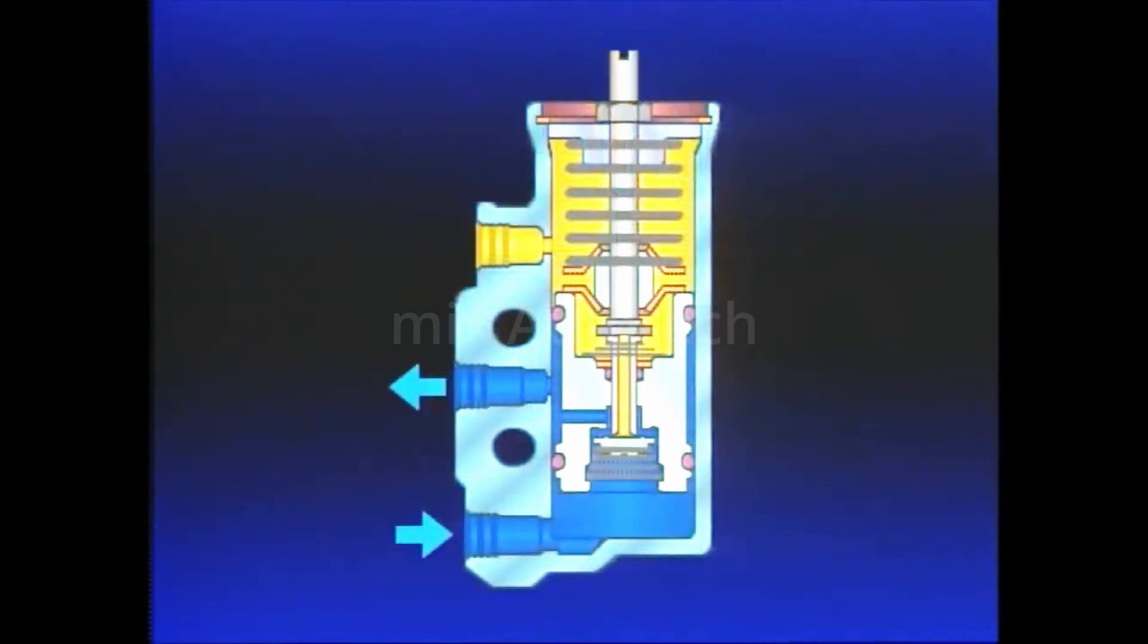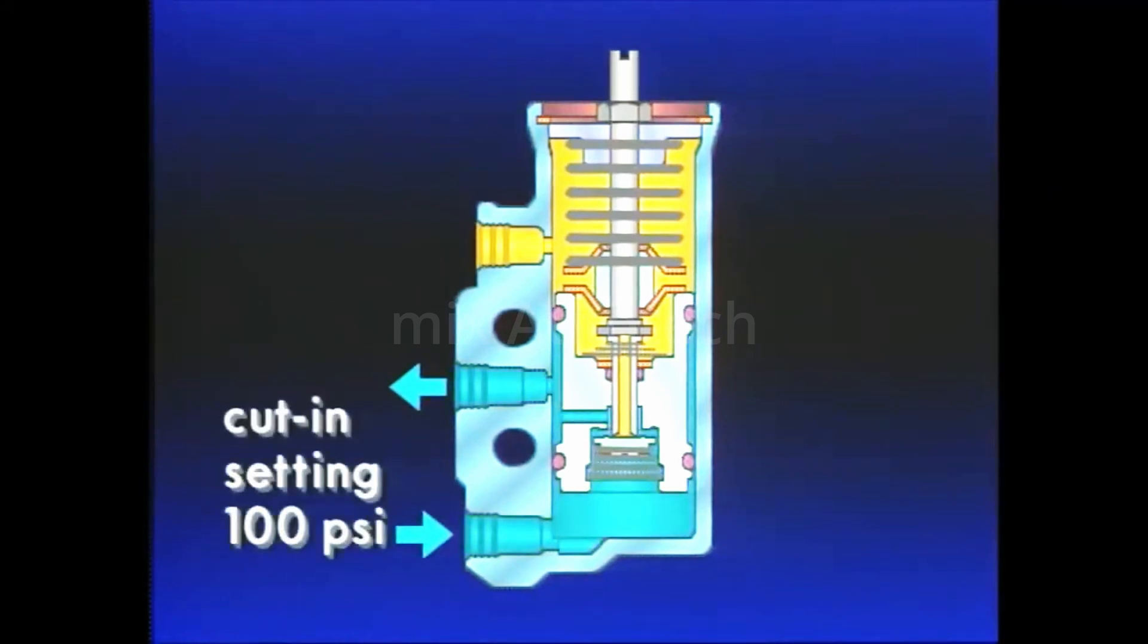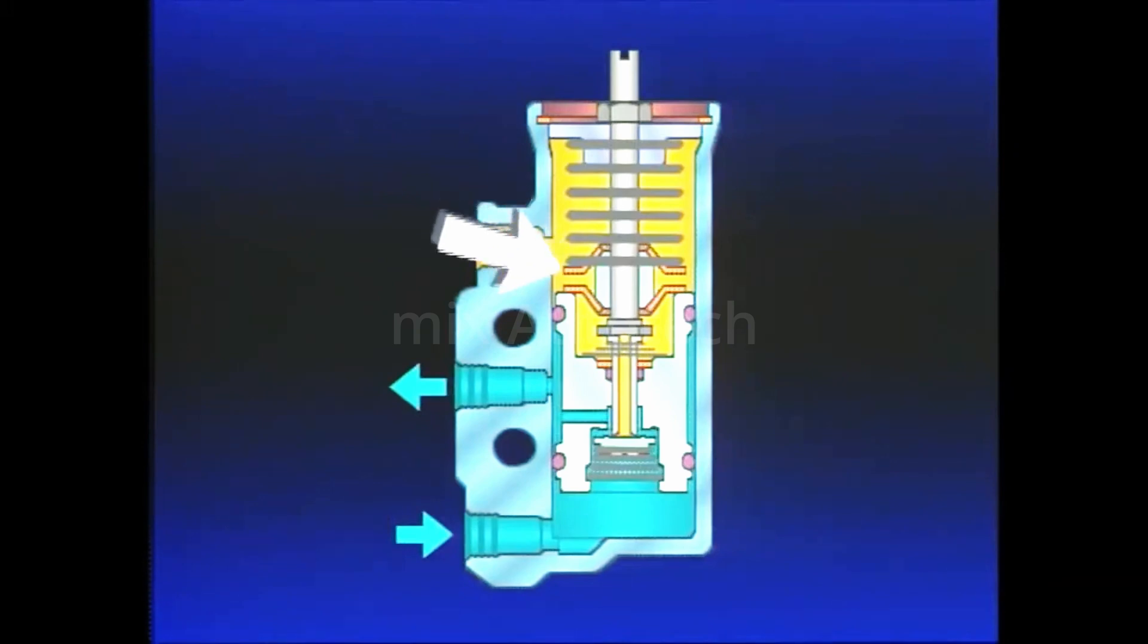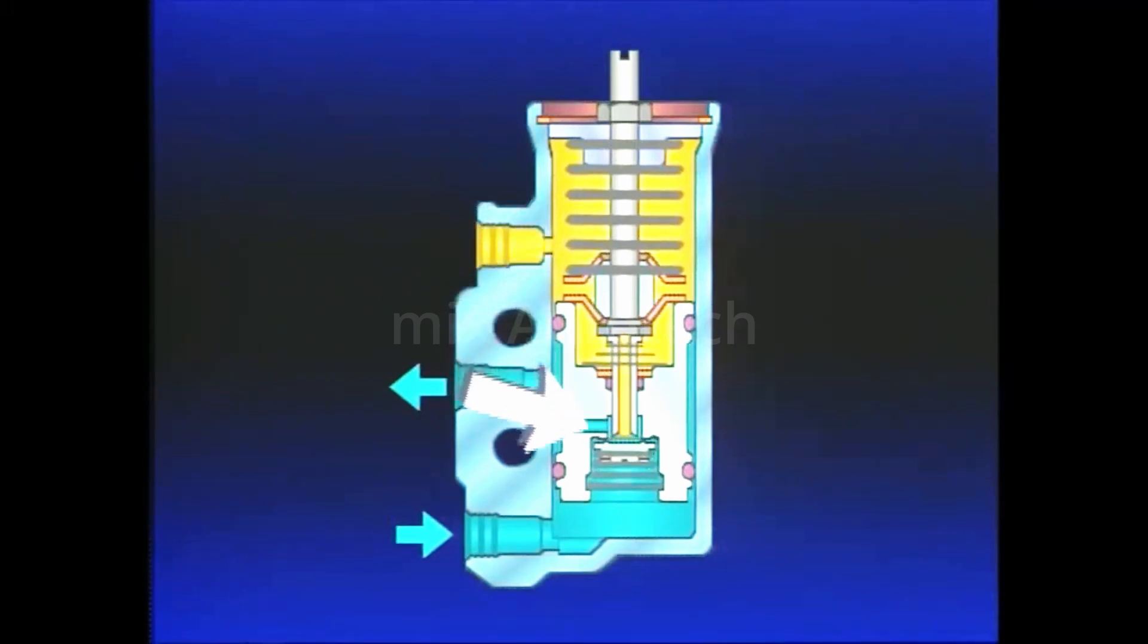When supply reservoir pressure drops to the cut-in pressure of the governor, typically 100 psi, the governor pressure setting spring moves the piston, closing the inlet and opening the exhaust.